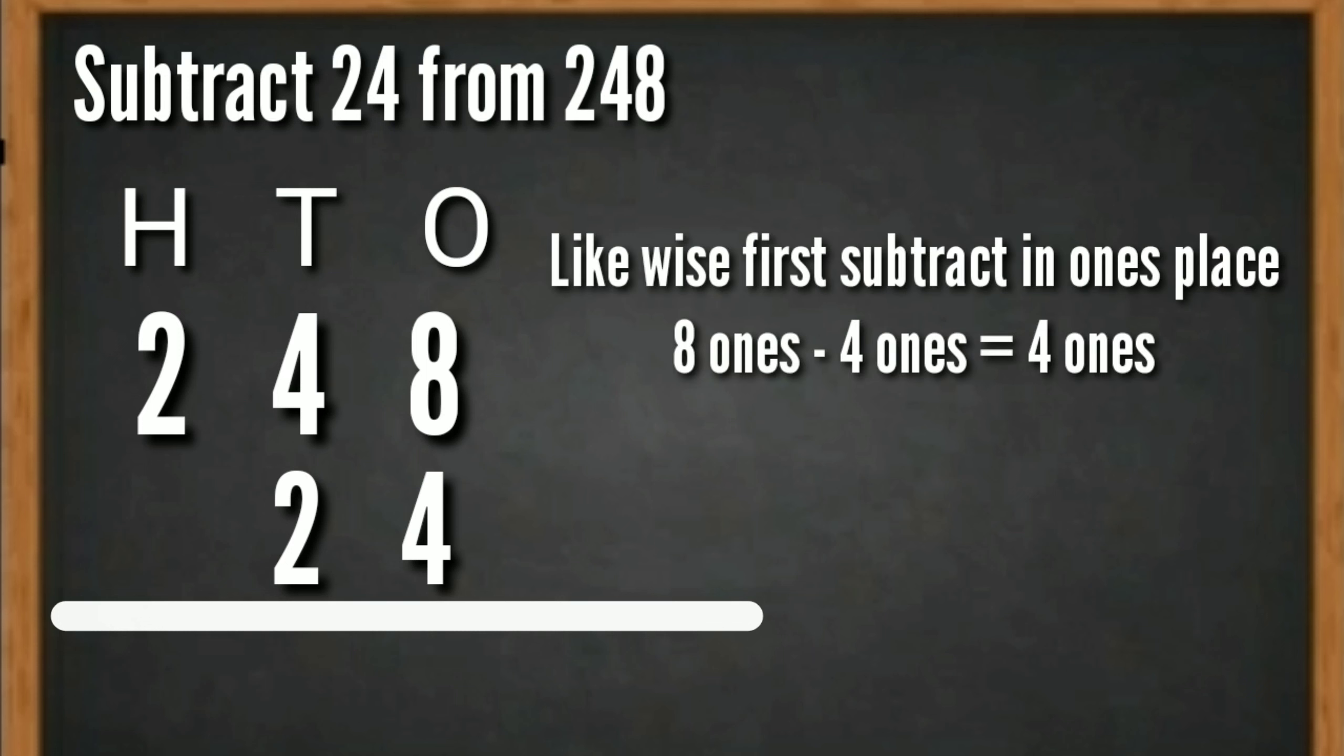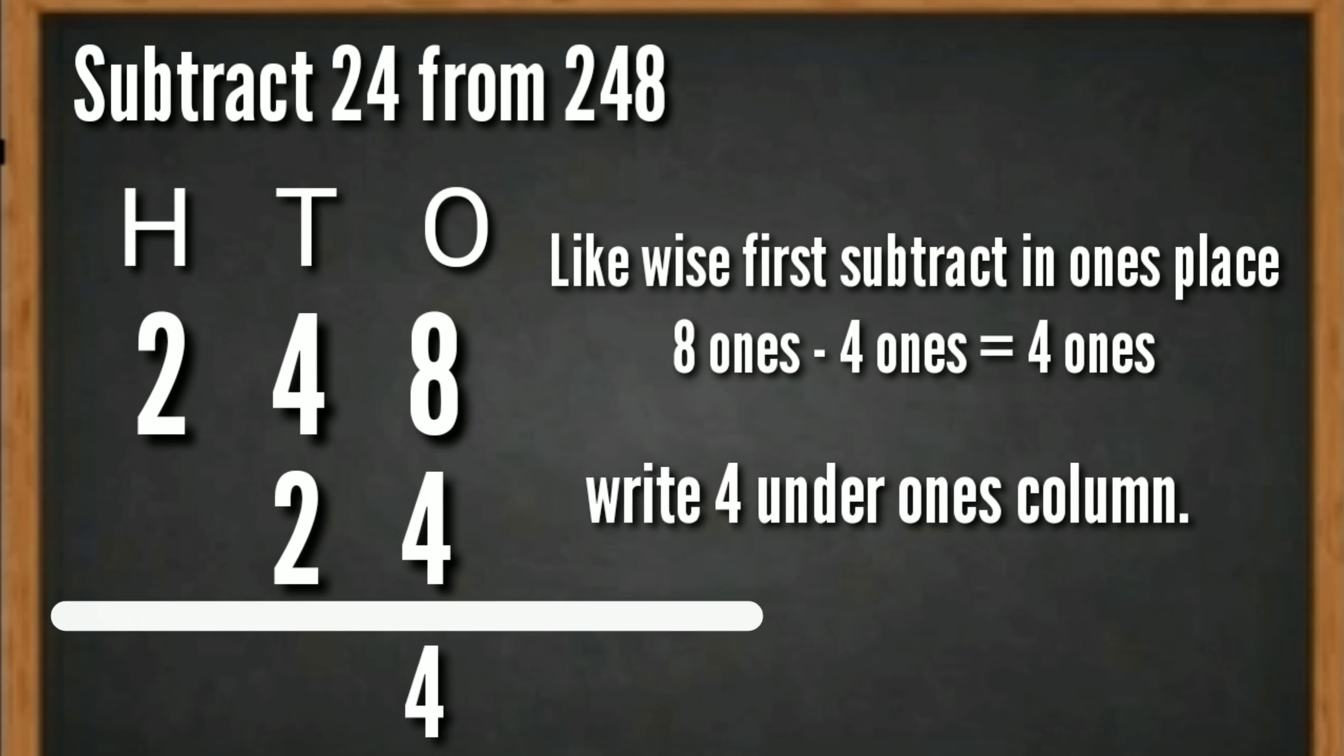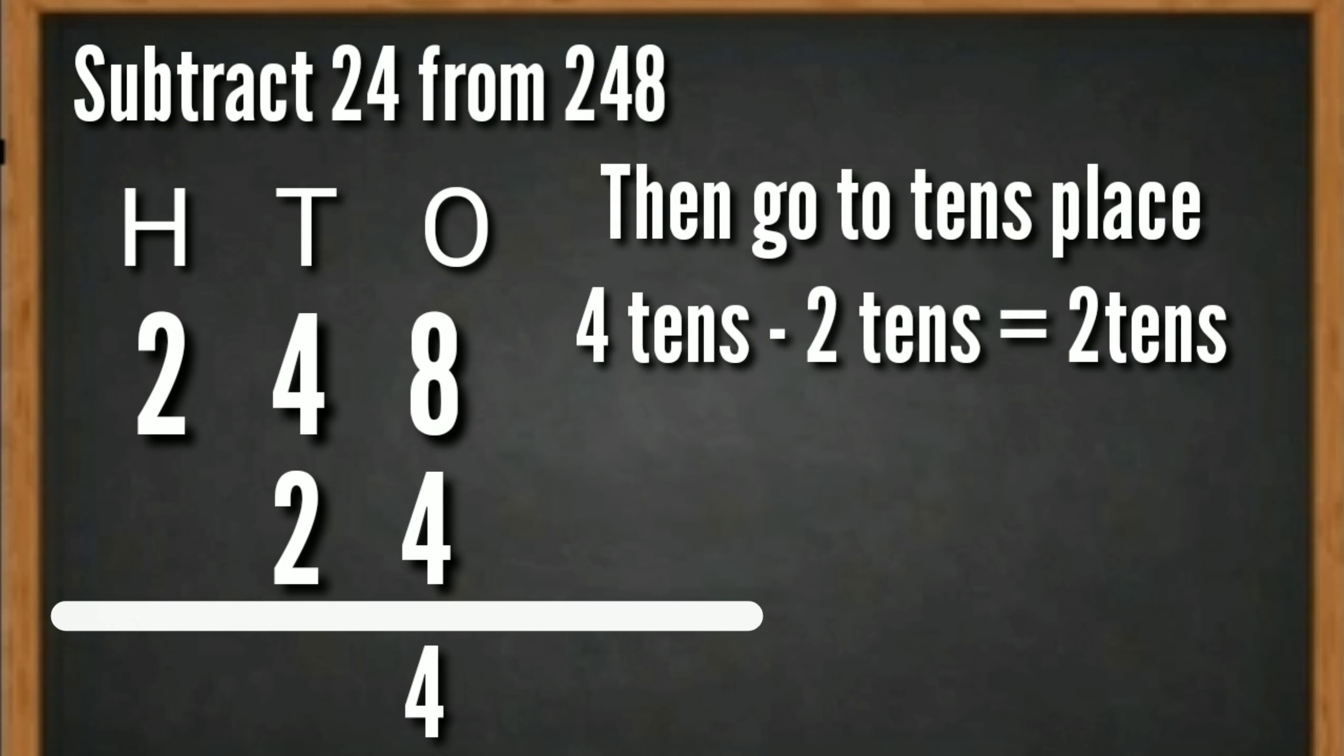first subtract in one's place. 8 ones minus 4 ones is equal to 4 ones. Write 4 under one's column. Then go to ten's place. 4 tens minus 2 tens is equal to 2 tens. Write 2 under ten's column.